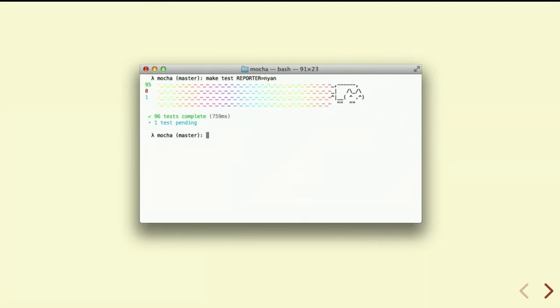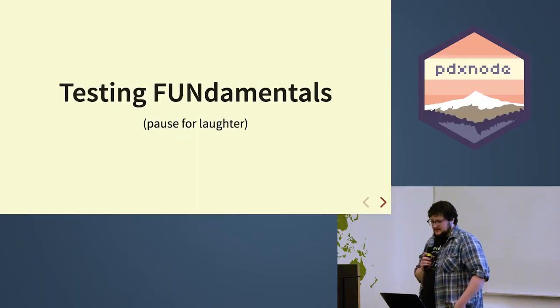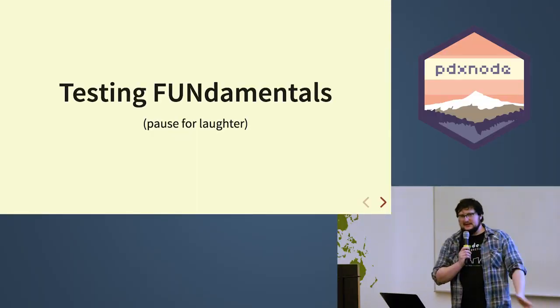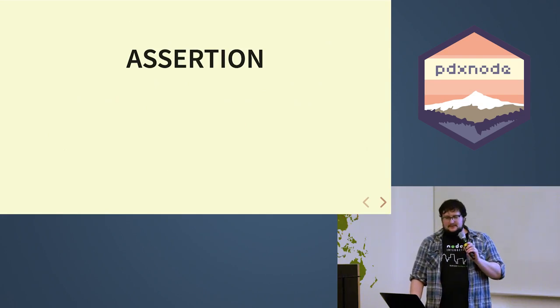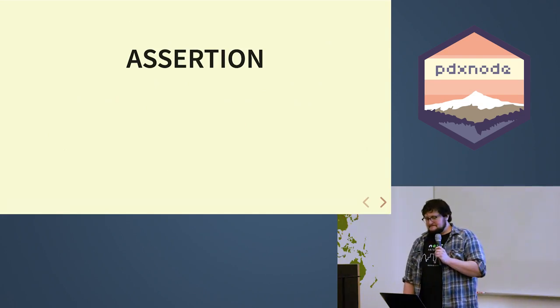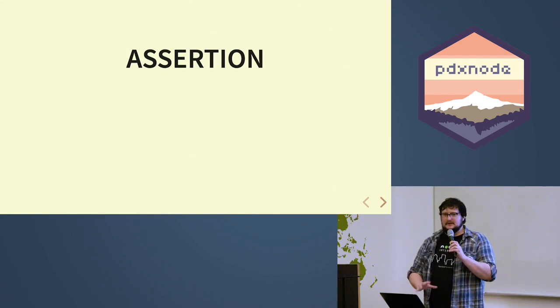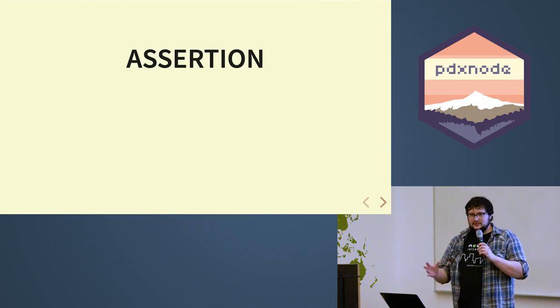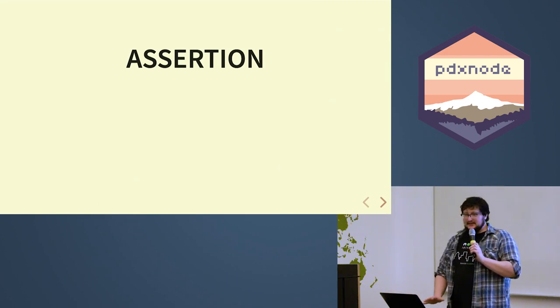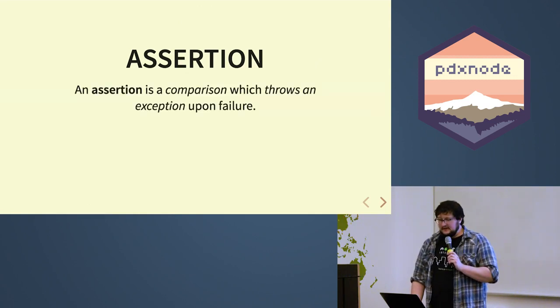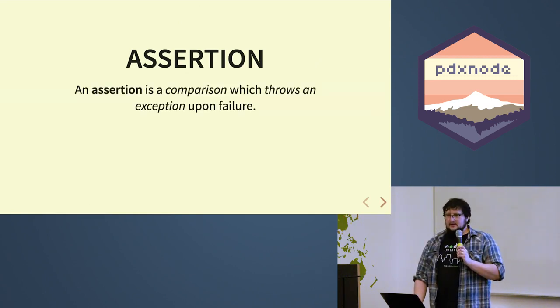Now I'm going to talk a little bit about some fundamentals — terminology. We're not going to go very deep; it won't hurt. The first thing is the assertion. Fundamentally, it's a comparison. If the comparison is true or truthy, nothing happens. If the comparison is false or falsy, it throws an exception. It's really trivial to write your own assertion function — you pass assert a value, and if that value evaluates to falsy, throw an error. That's basically what an assertion is.